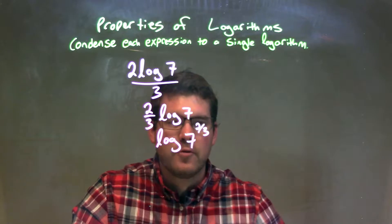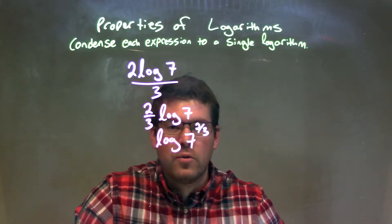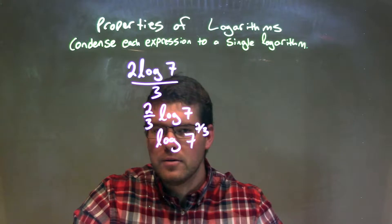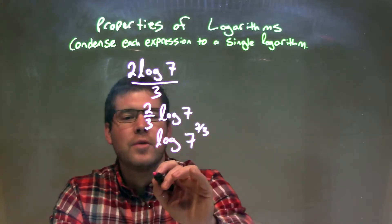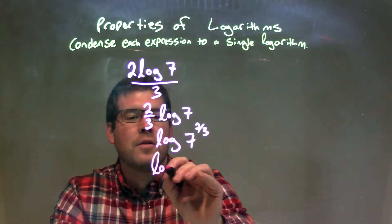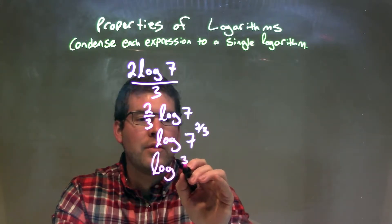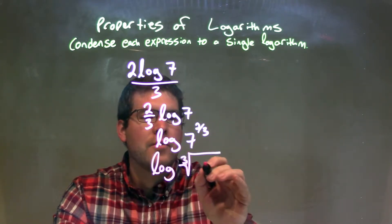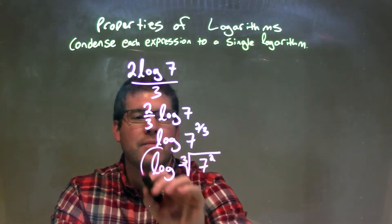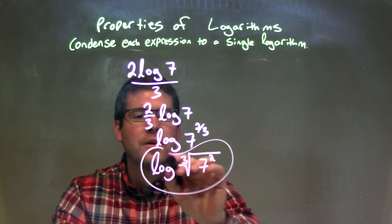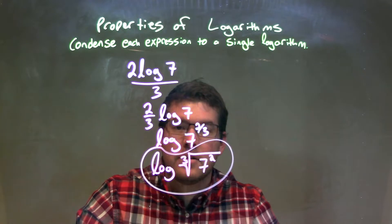Since that third is in there, we know that's going to mean the third root. So the 2 thirds power — we take the 2 thirds power of 7. We can rewrite that to be the log of the third root — that's the 1 third right there — the third root of 7 squared. And there we have it. Our final answer is log of the third root of 7 squared.